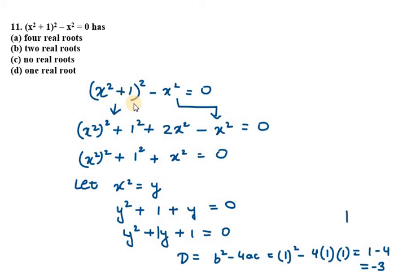That means my discriminant is less than 0. And if my discriminant is less than 0, that means it has no real roots. We can say that y has no real roots. If y has no real roots, that means x square will have no real roots. Therefore, the answer for this is c part. That's your solution for question number 11.